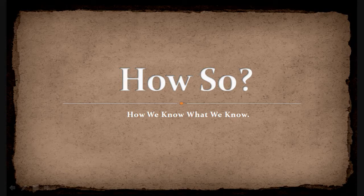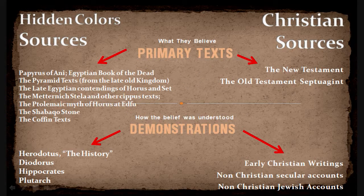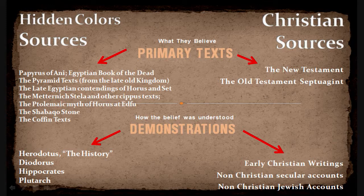How so? How do we know what we know? I put this together so you could easily see where we're coming from. On the left side you have Hidden Color Sources — sources that I've read. I haven't read all of them, but I continue to study them. Not all sources are on the left; there are a lot more Egyptian sources. They're called primary texts — it's what people wrote, it's what they believed. Underneath that, what I call demonstrations: how their belief was understood.